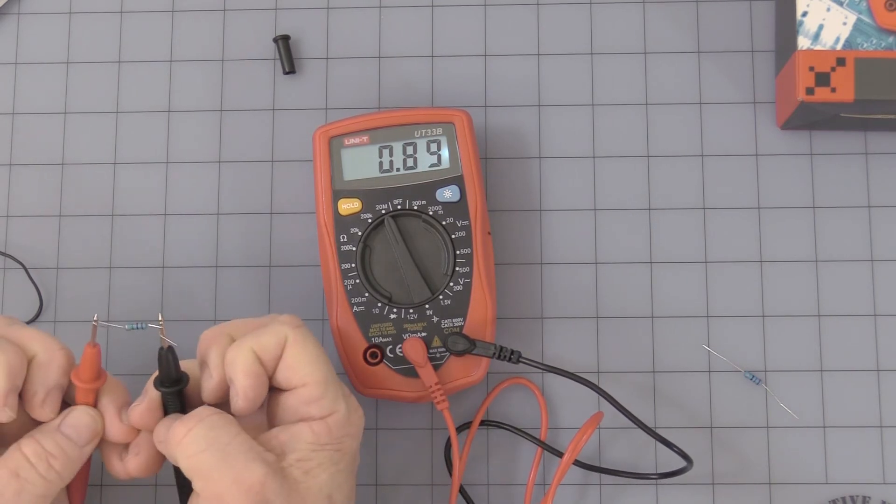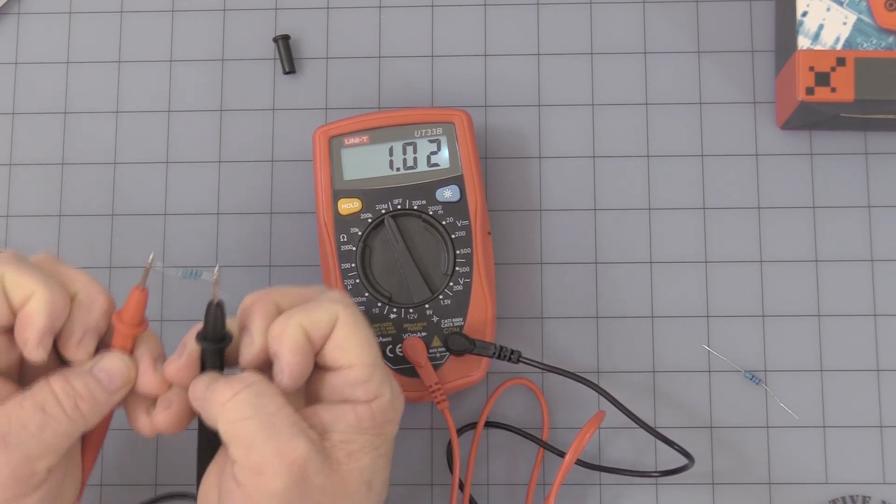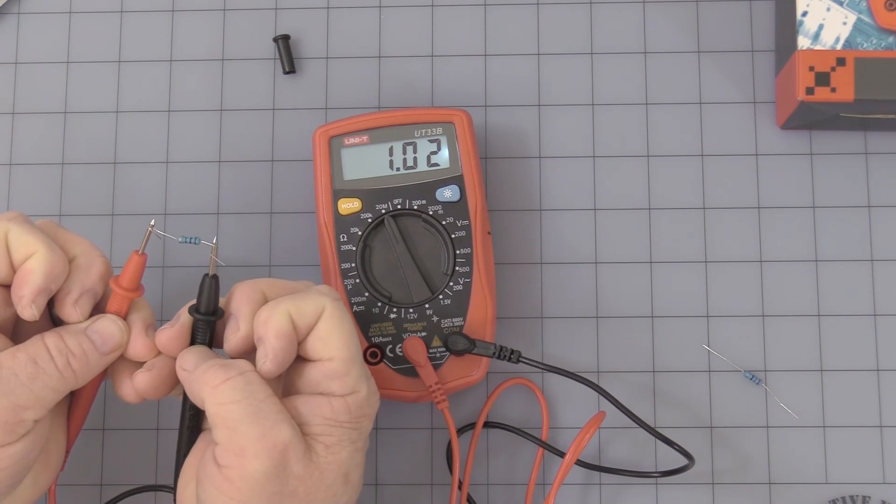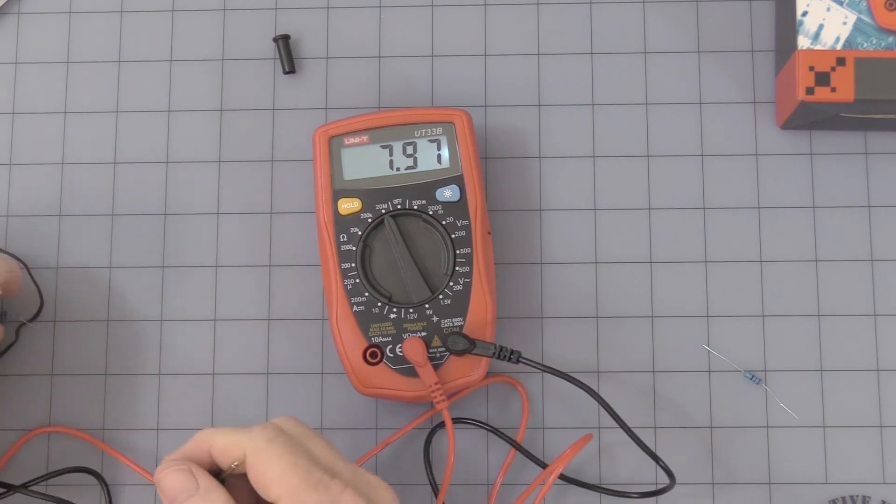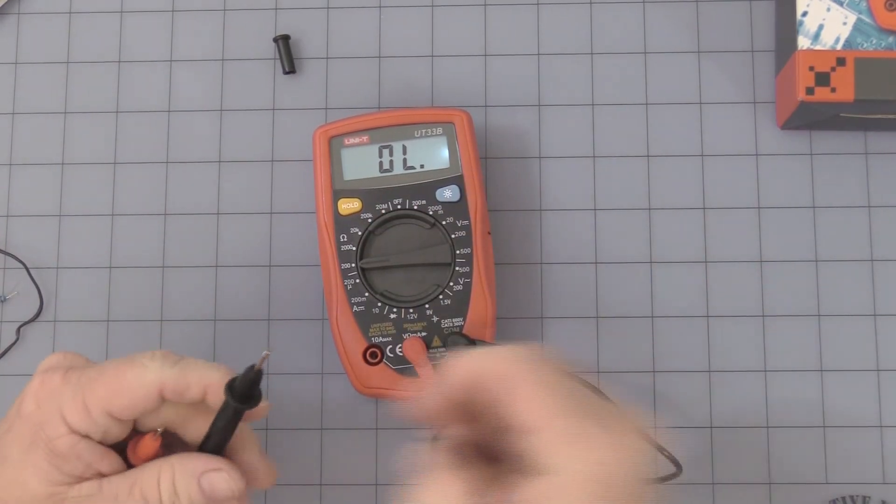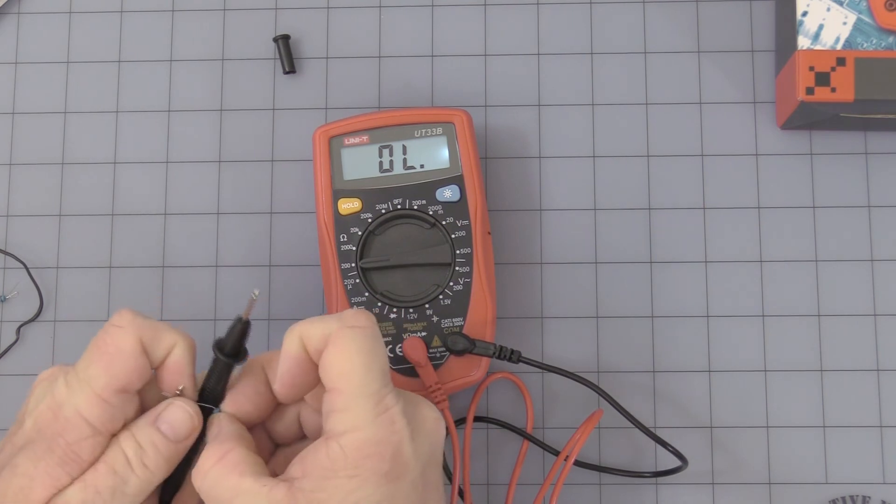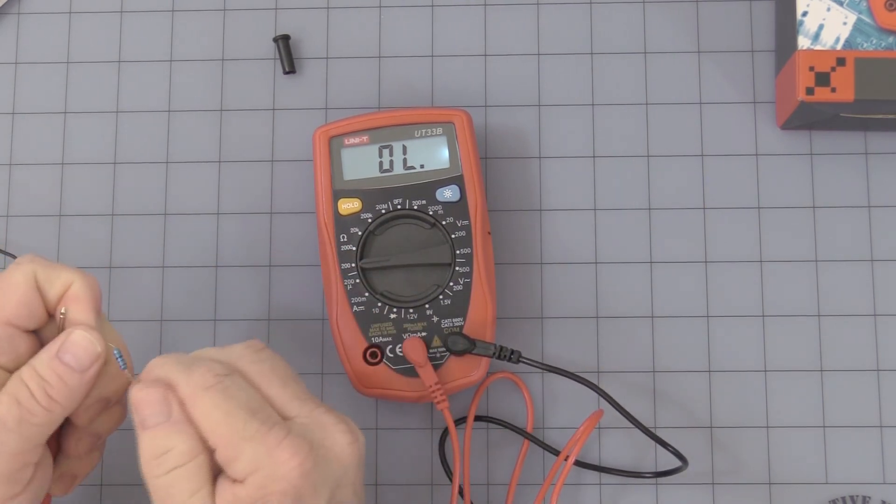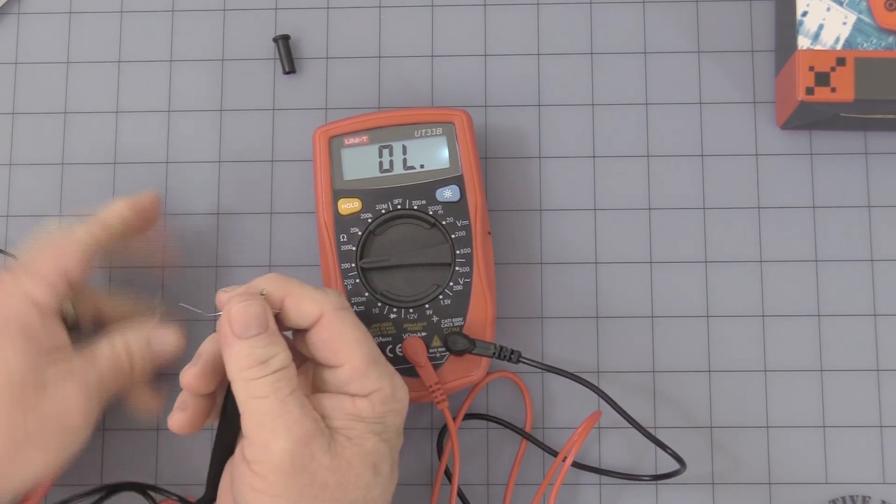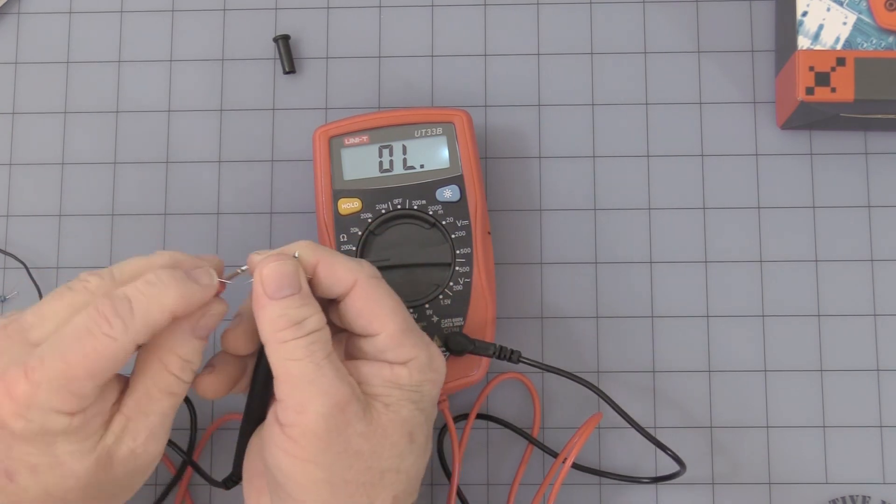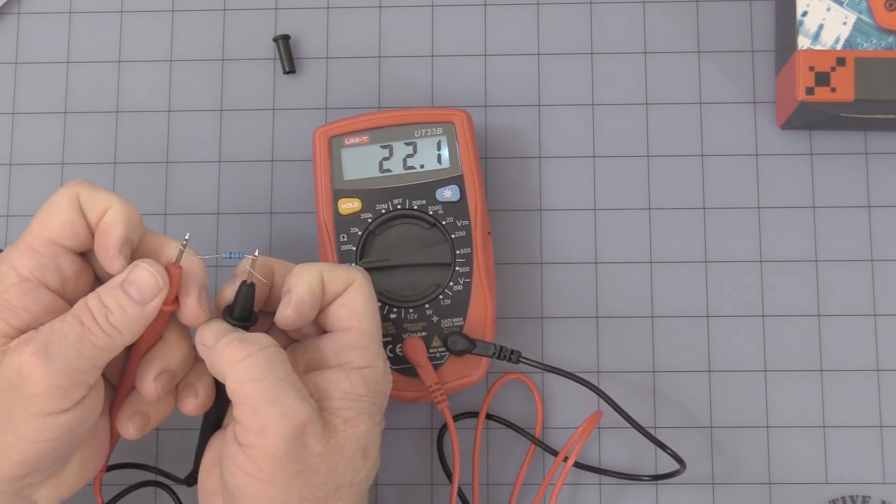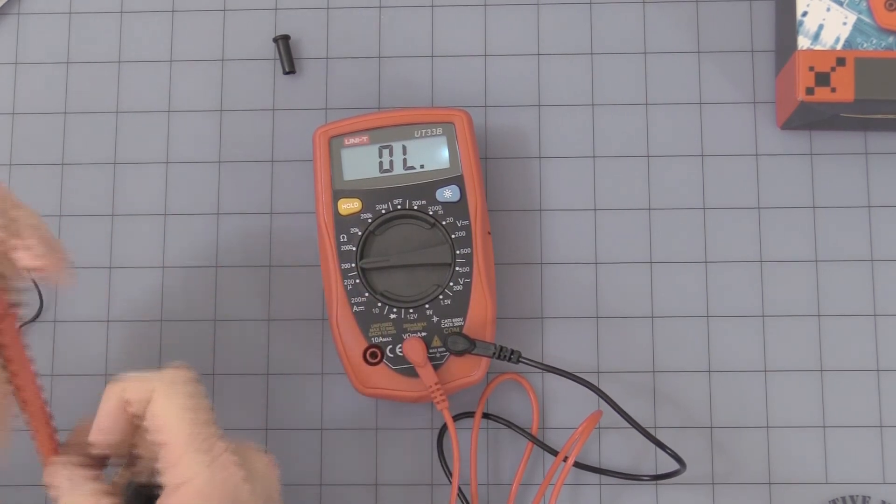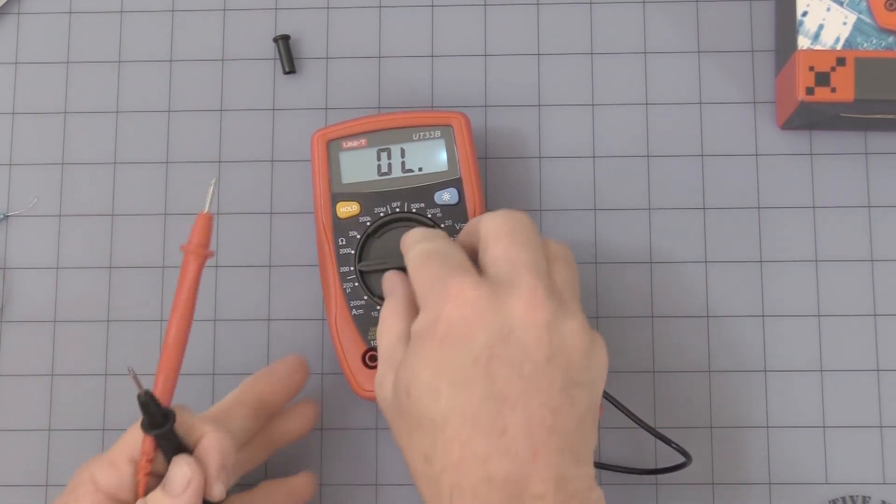You have to be careful - your fingers can definitely skew the reading on the higher ohms. And then my other one here should be, I believe it was a 22, 2.2. Okay, that's the ohms, that's that.